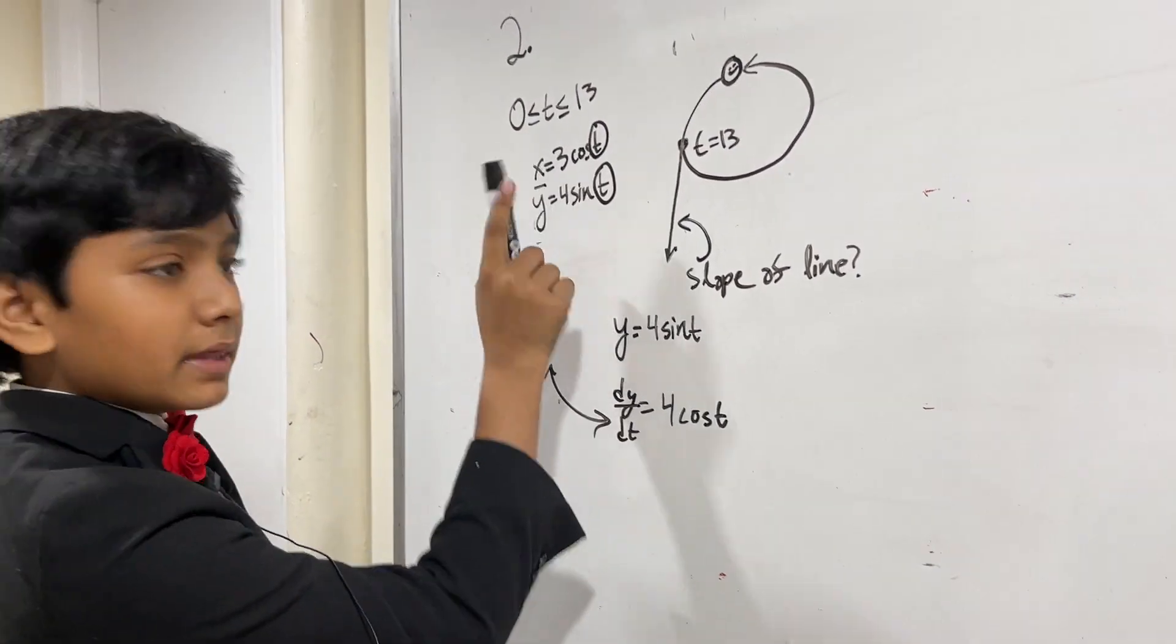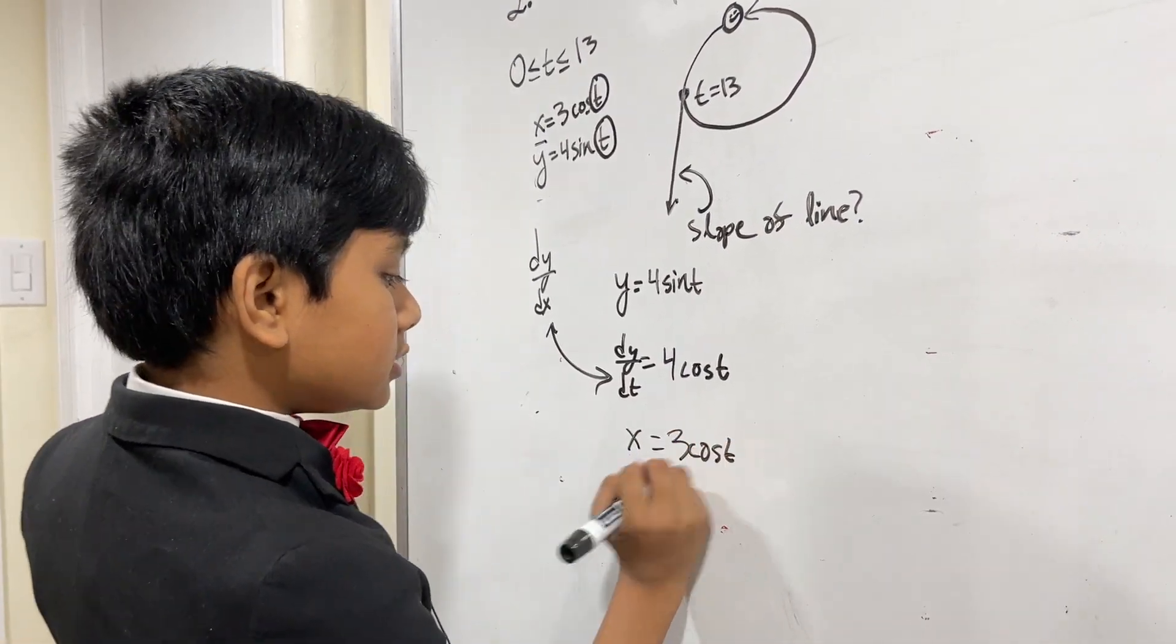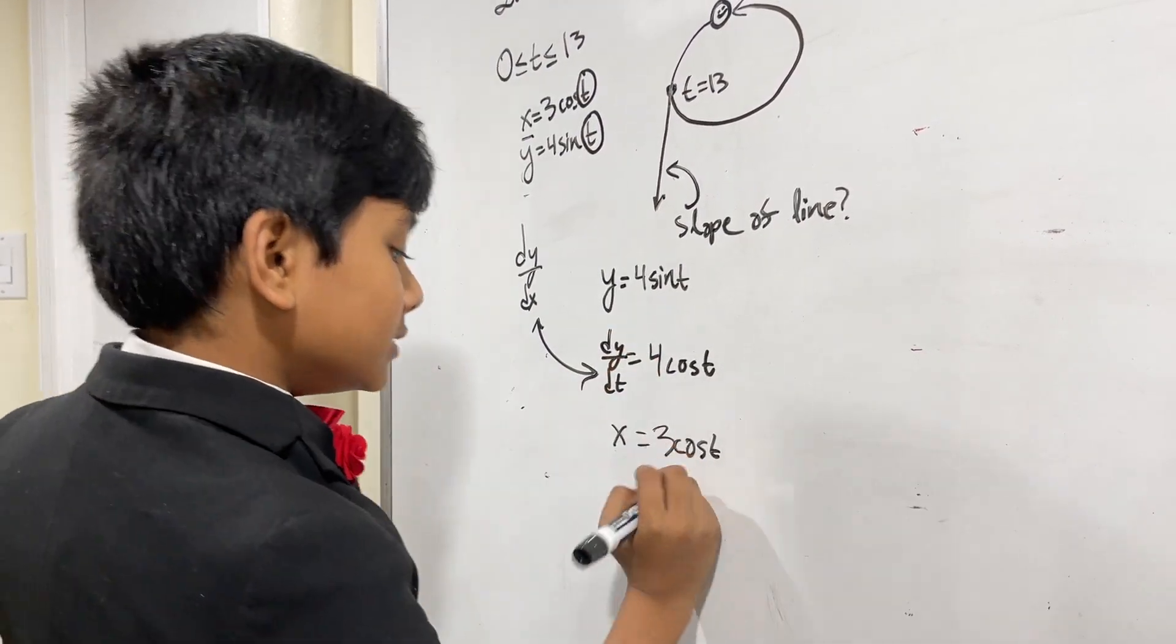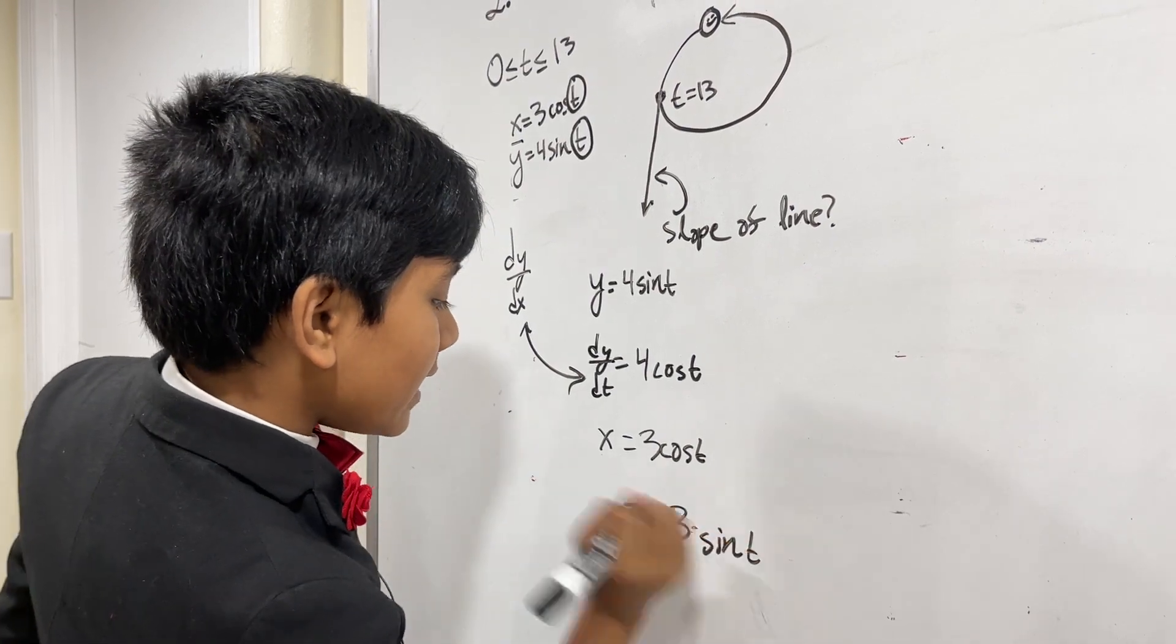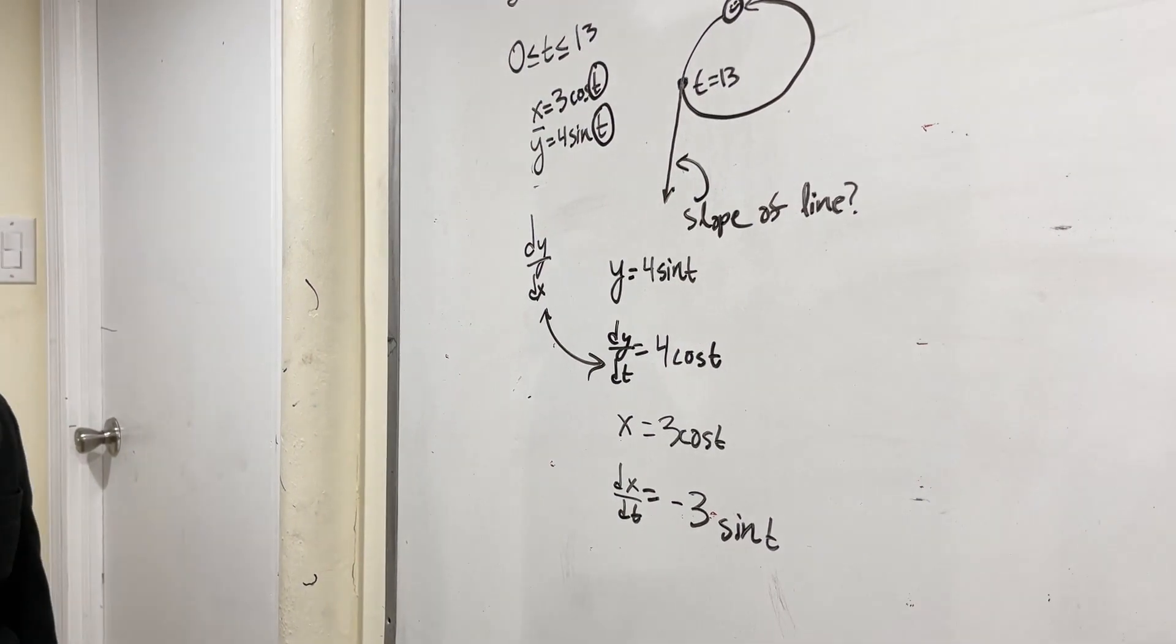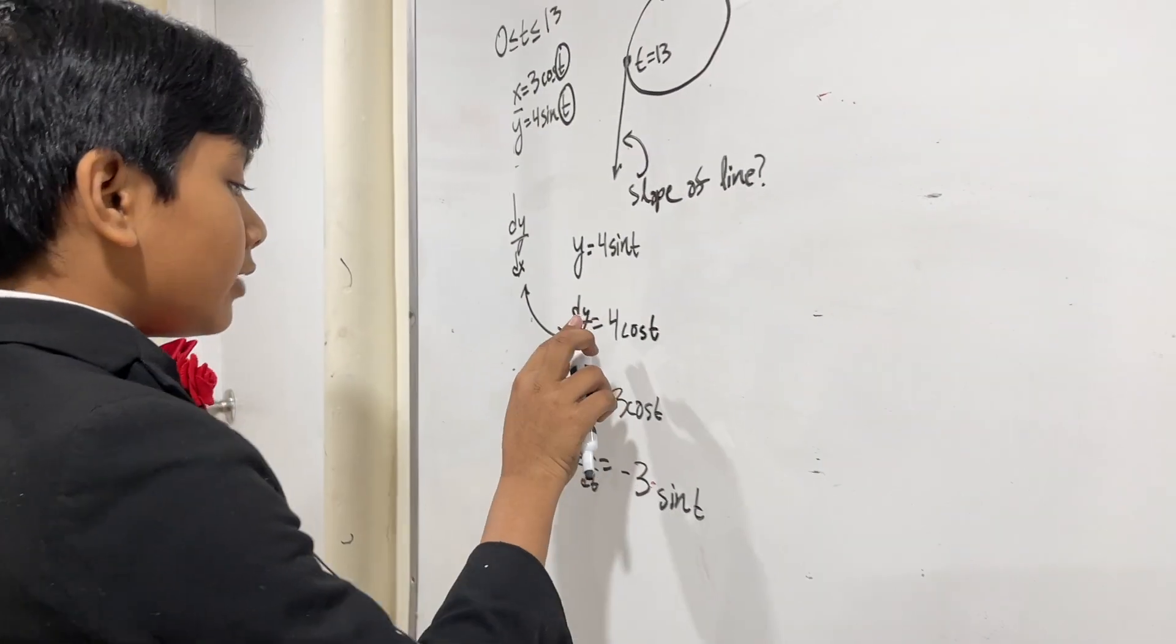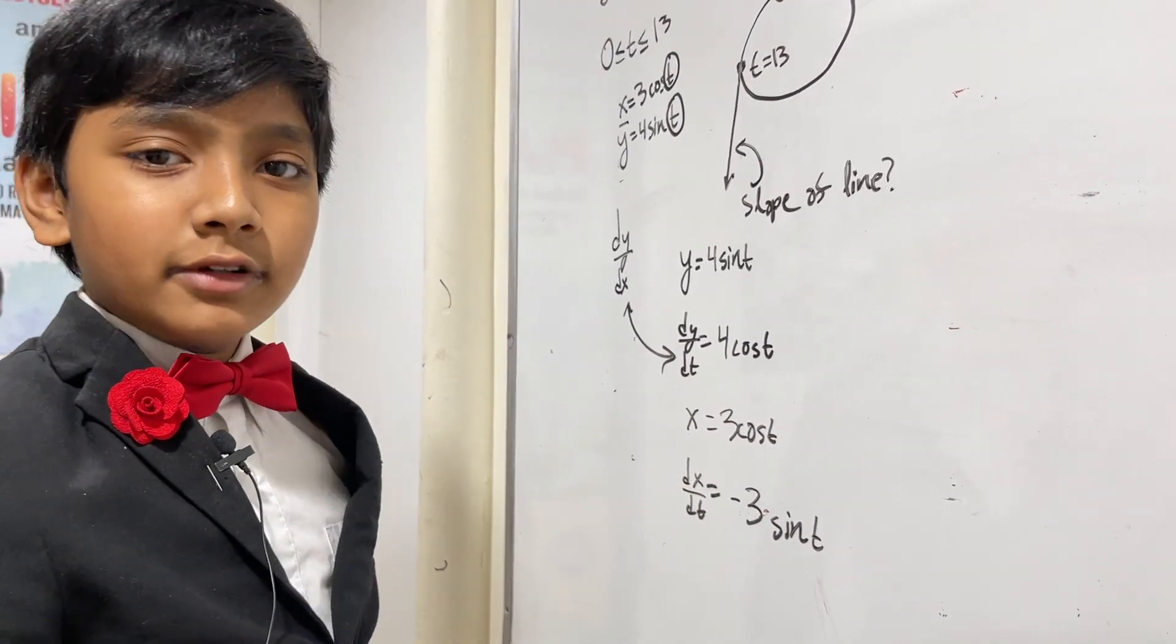Now, let's try and do the same thing with dx. x is 3 cosine t. That means the derivative of cosine is minus sine, so we get minus 3 sine t, then dx/dt. What can we do with these?